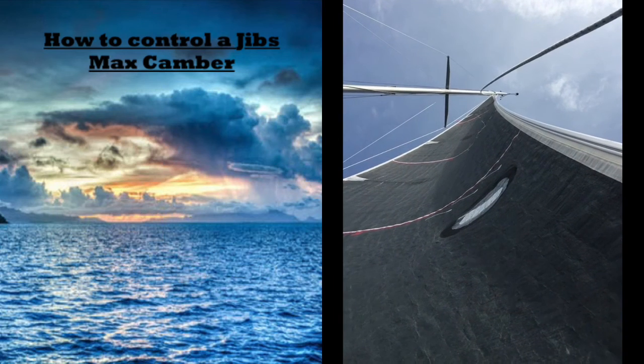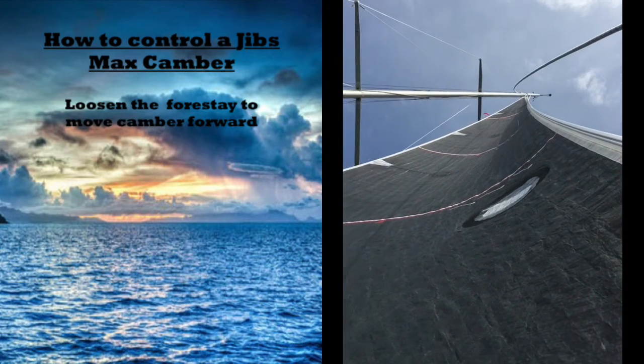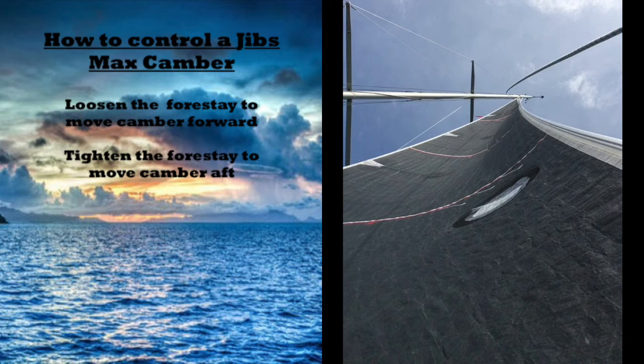Now that we understand the theory, it's only fitting that we end today's video looking at some actual sail shapes. The first example we're going to look at here is a sail set up for light winds with the max camber forward at the 25 percent mark. One of the ways to achieve this is to have a relatively loose forestay. You can tell we're set up this way by the amount of sag or curvature that we have in the forestay.